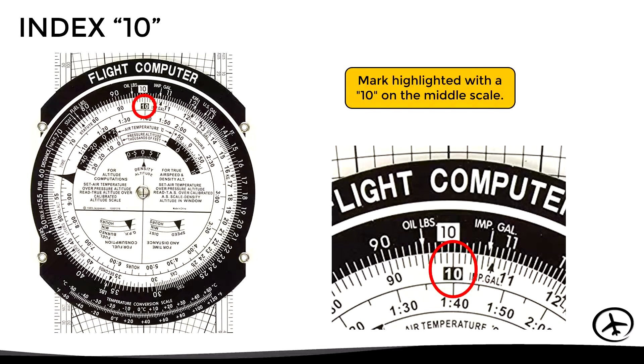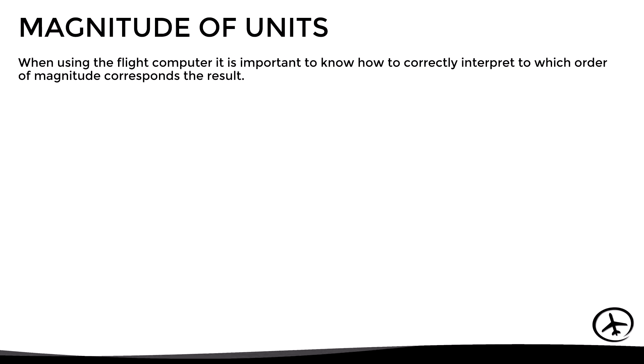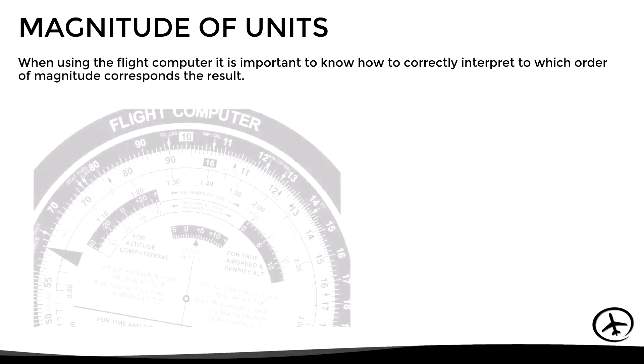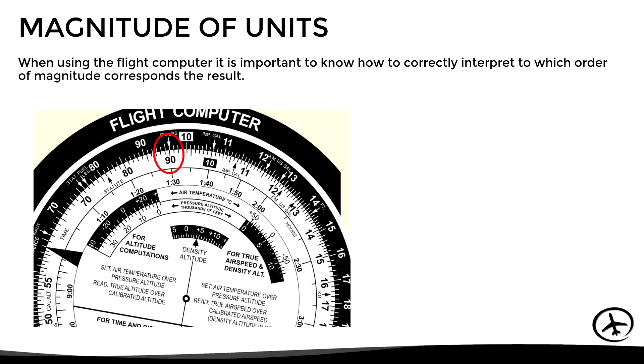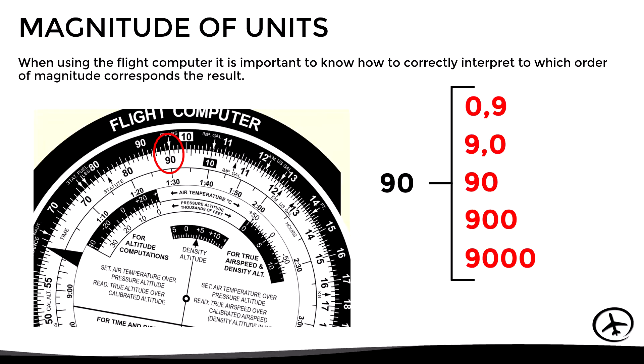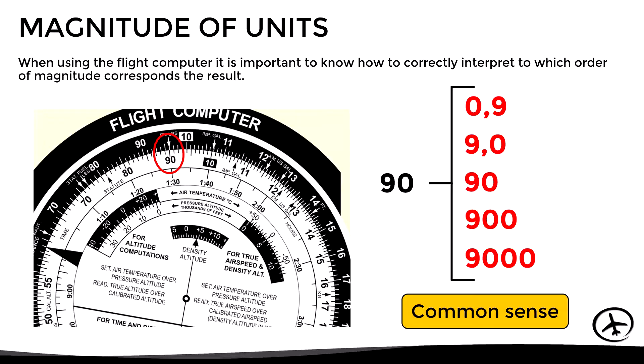Another important marking is Index 10, a mark highlighted with a 10 on the middle scale. Before looking at the different calculations, we must understand a key aspect regarding the interpretation of these scales: the magnitude of the units. When using the flight computer, it is important to know how to correctly interpret the order of magnitude of the result. For example, the number 90 in the scale can be interpreted as 0.9, 9, 90, 900, or 9000 depending on the type of calculation being made, so common sense must be used.